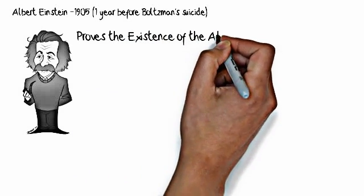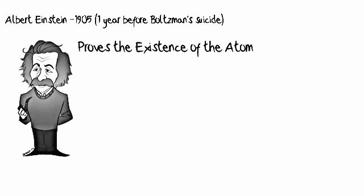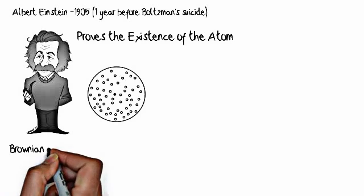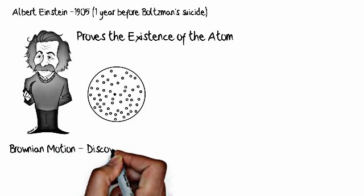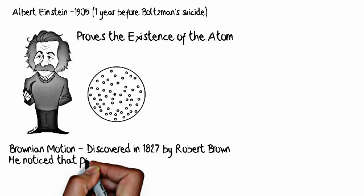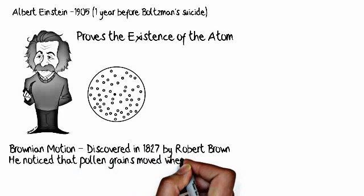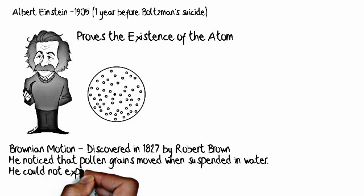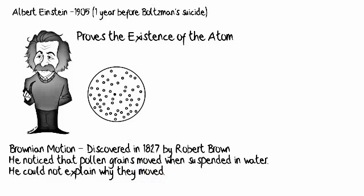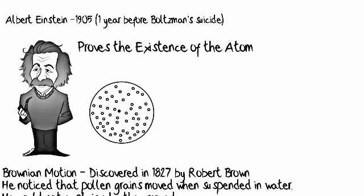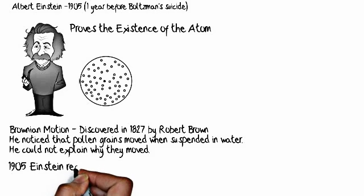So what Albert Einstein did is he proves the existence of the atom and the way he goes about doing this is he examines Brownian motion. Brownian motion was discovered by Robert Brown in 1827. And what it is, is what Brown noticed was that pollen grains when suspended in water moved. They didn't stay still, they moved, they were jostled about. And Robert Brown discovered this, but he couldn't understand why this was happening.